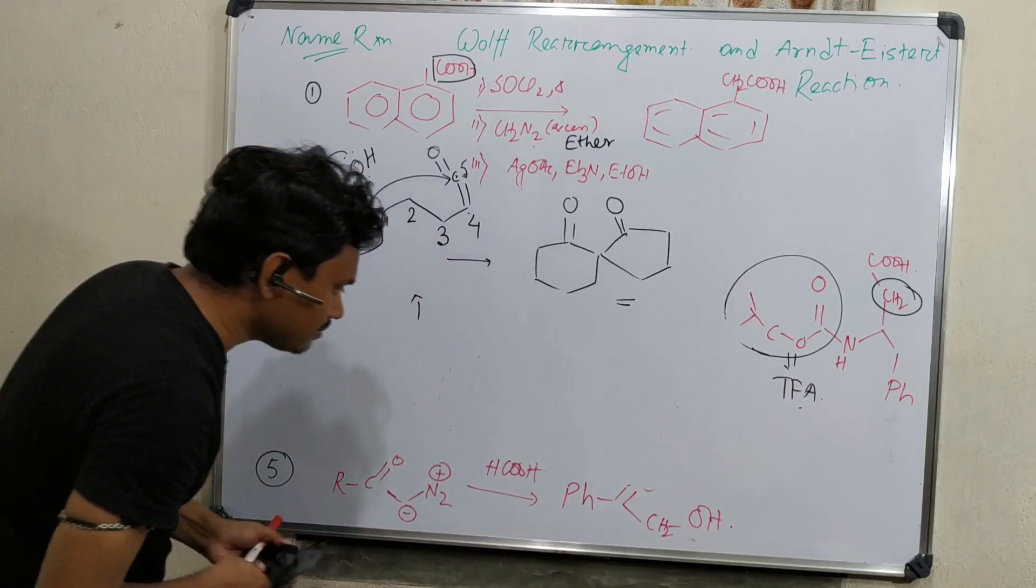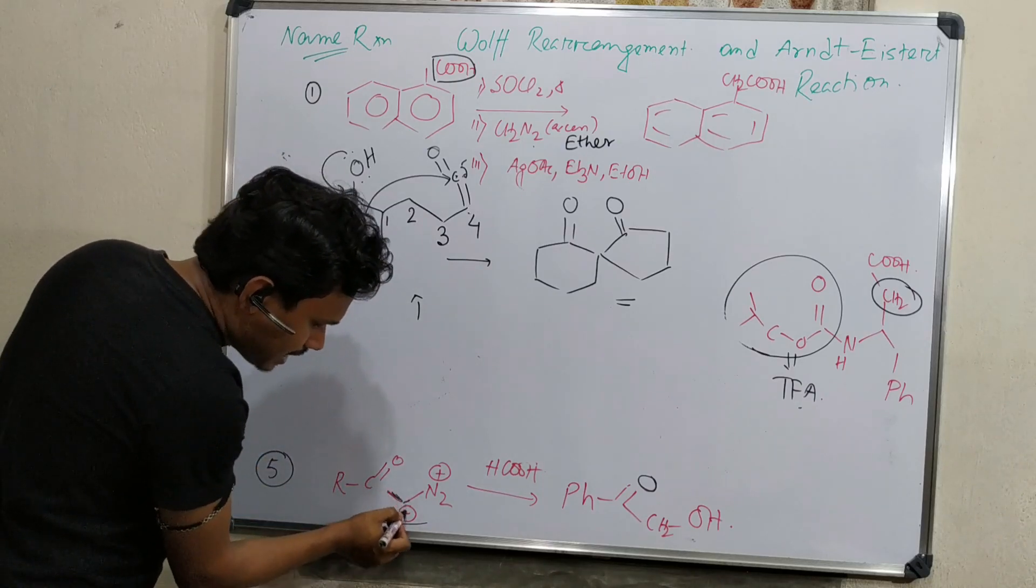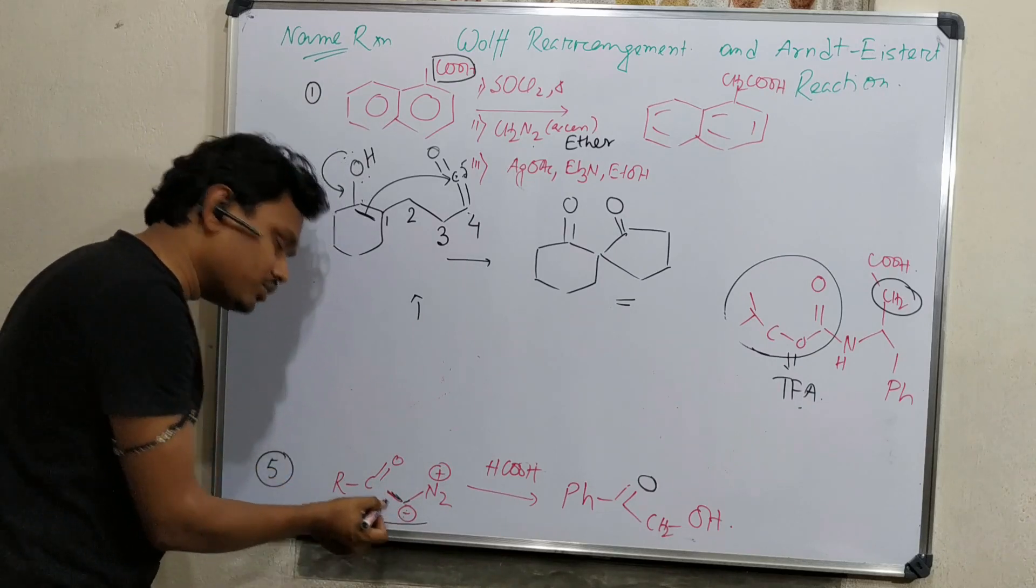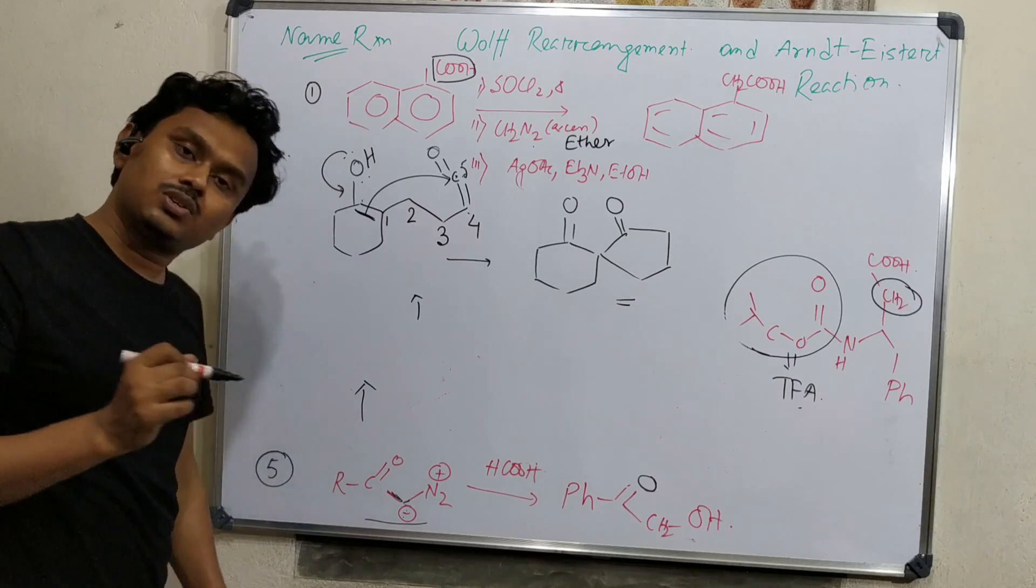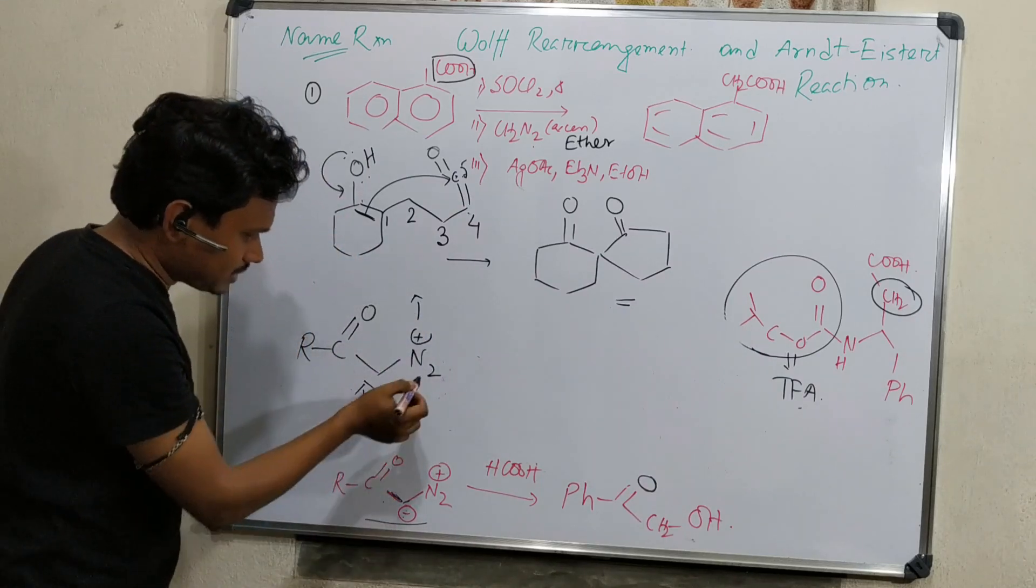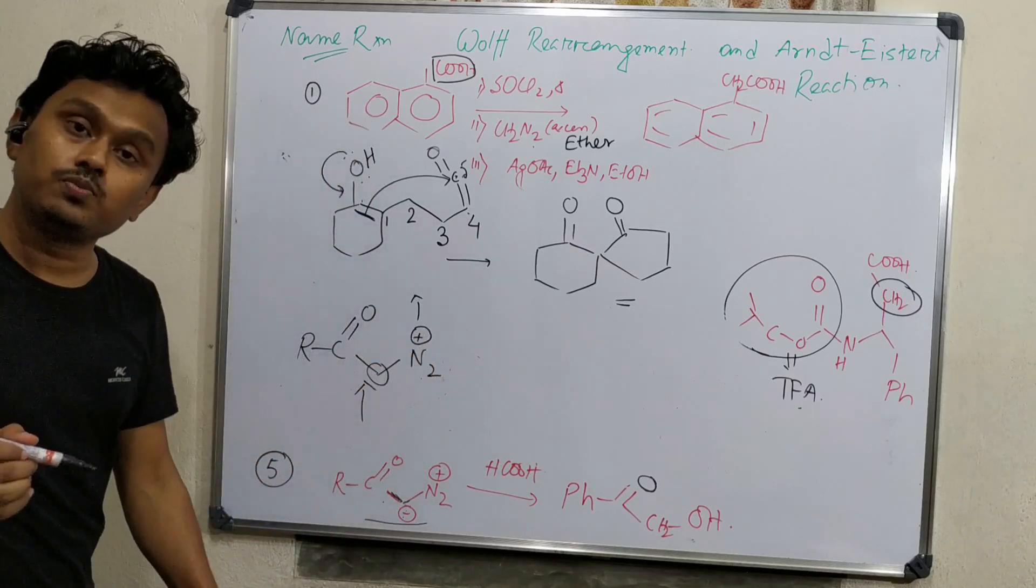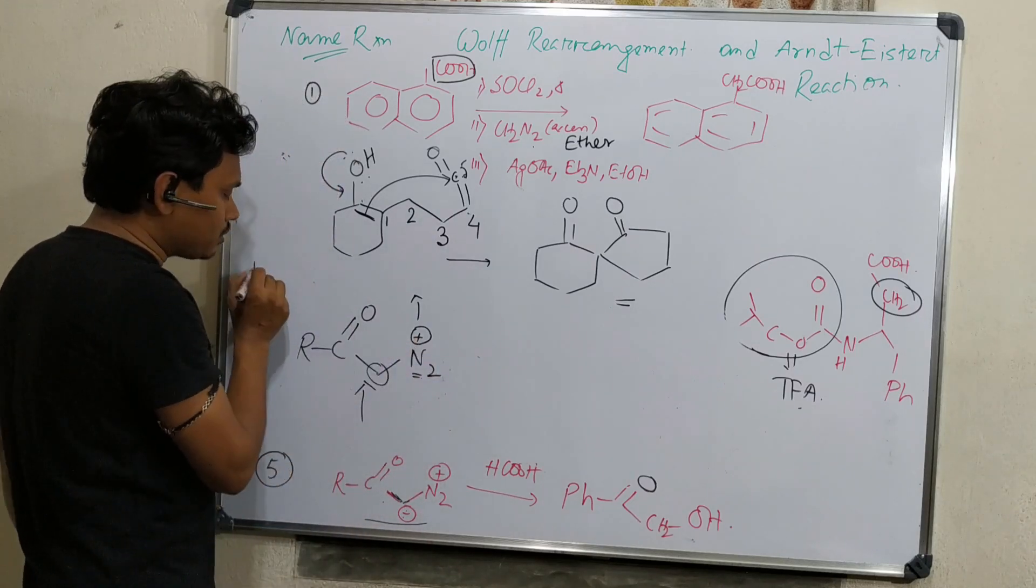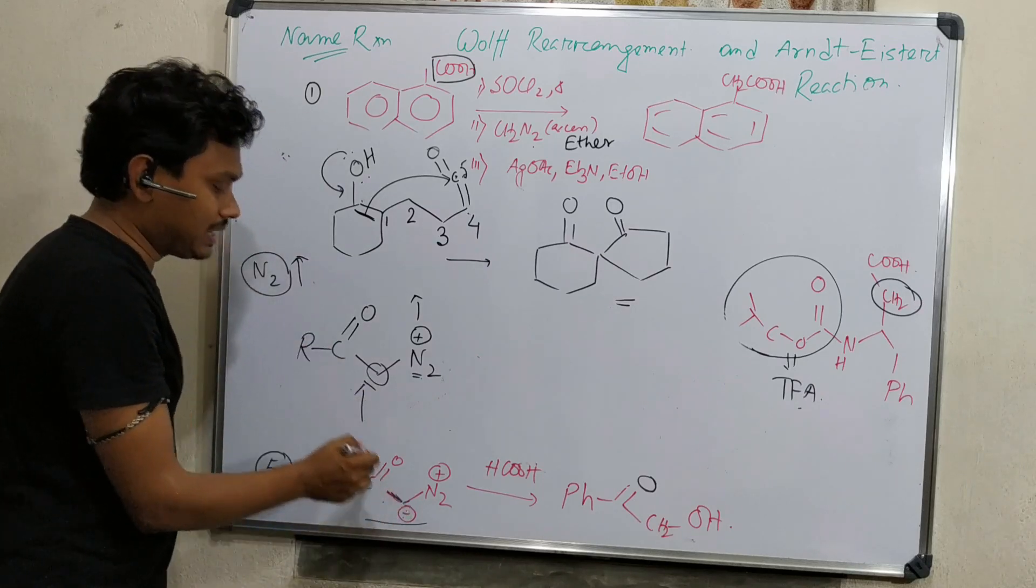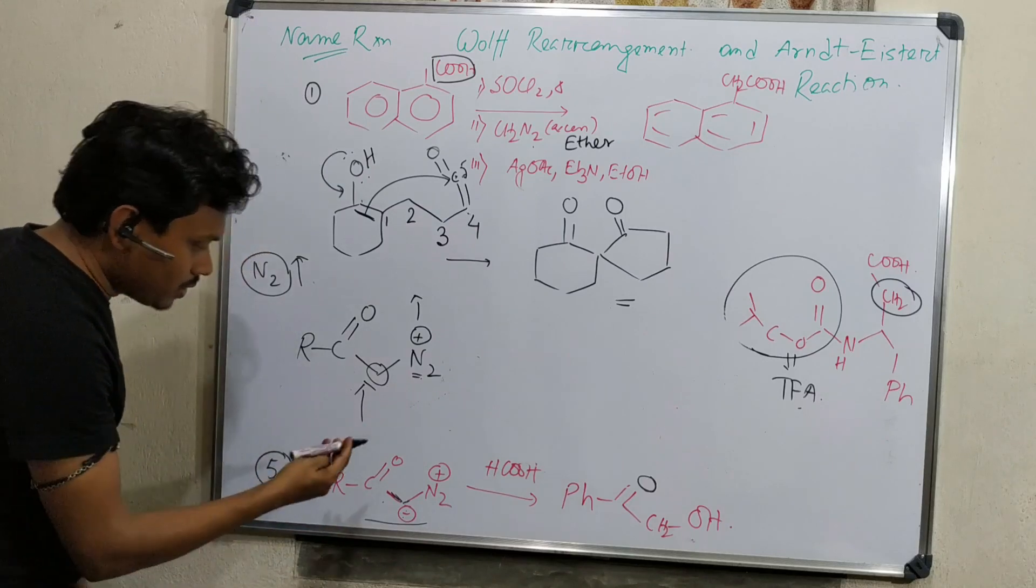The next example, this diazo ketone is reacted with formic acid. What happens? We know this is a carbanion. I agree that this negative charge is delocalized with this carbonyl as well as diazo group. But this negative charge actually resides on carbon and formic acid is relatively strong acid. This part is protonated first. If we compare the stability of this versus this, this is relatively more unstable because this carbon is attached to both a very good leaving group and another electron-withdrawing nitrogen.